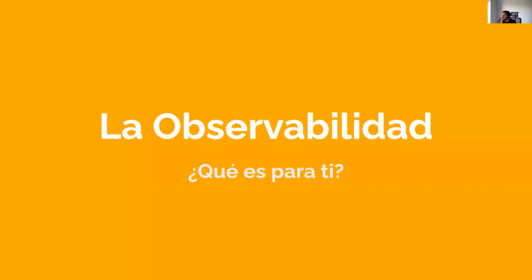La observabilidad siempre habla desde fuera, de lo que vemos desde fuera. También que se tenga visibilidad de cómo se está ejecutando realmente el sistema. Si yo, por ejemplo, entro en una empresa o no tengo conocimiento sobre cómo funciona cierto flujo desde que un usuario da clic a un botón en la UI hasta que finaliza, puede haber diferentes procesos síncronos, asíncronos. La gracia de la observabilidad es que alguien no tenga que meterse en el código para poder llegar a saber cómo funciona ese flujo.